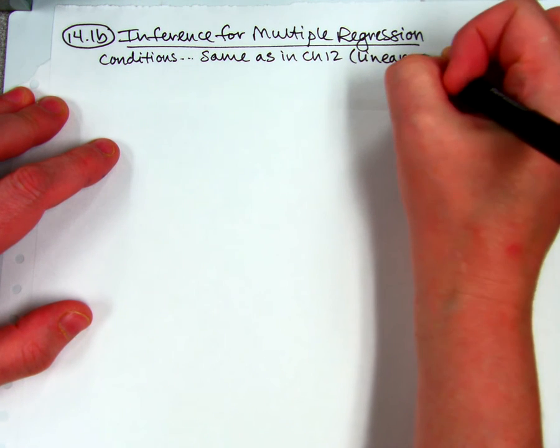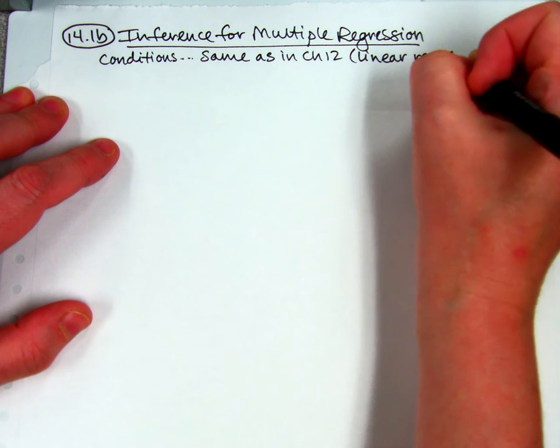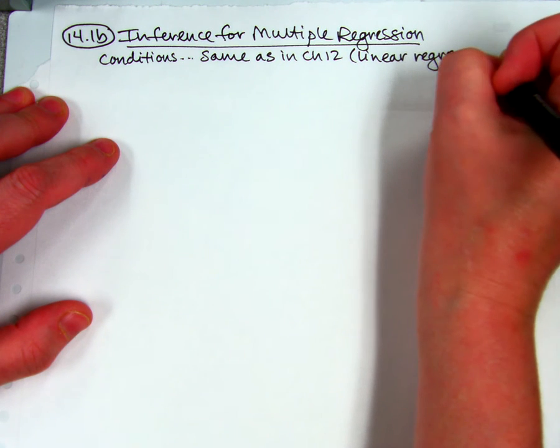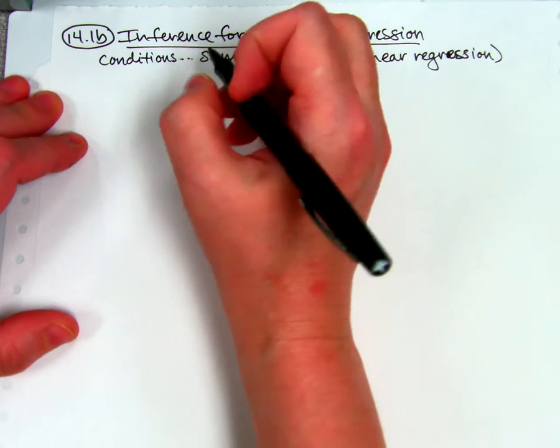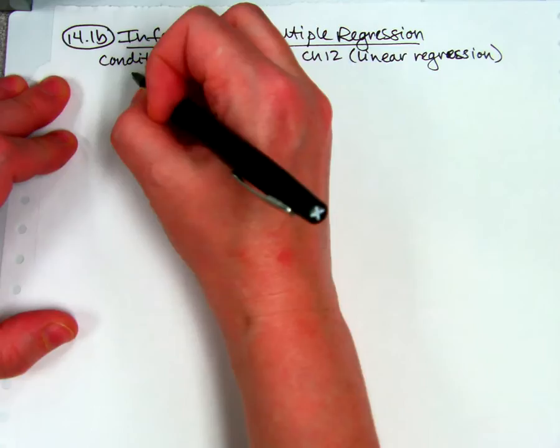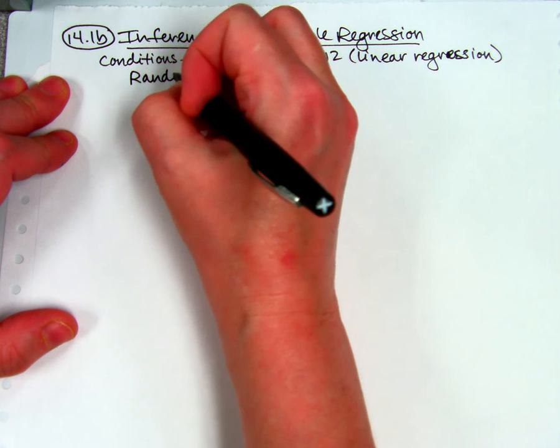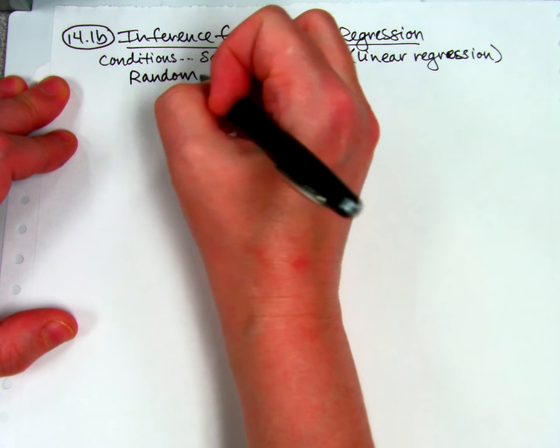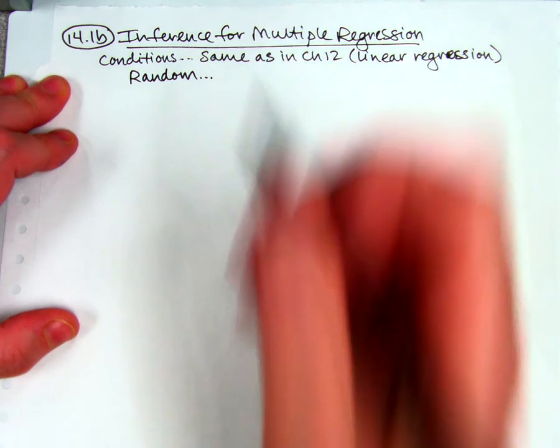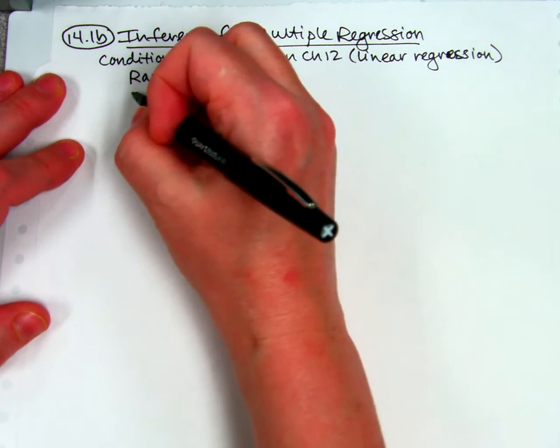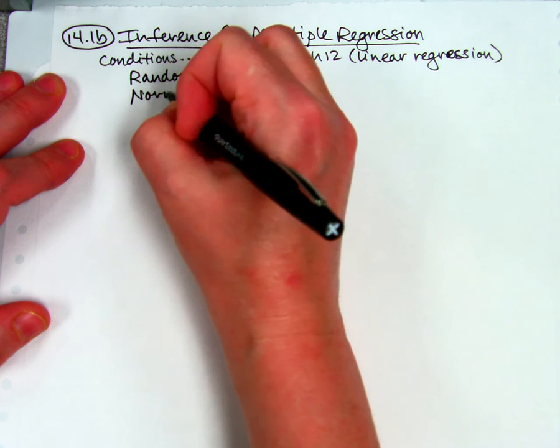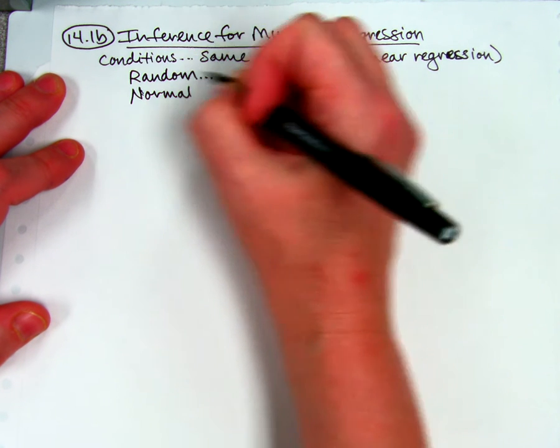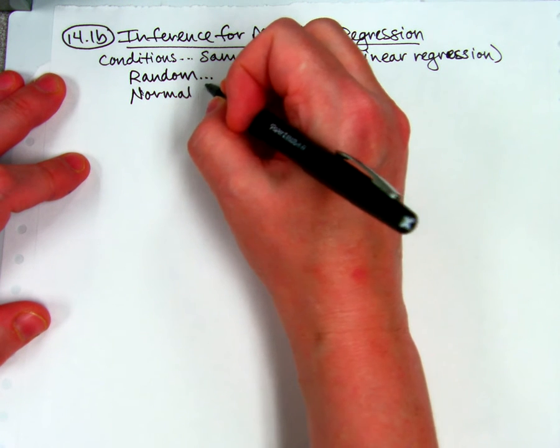I'm going to write them down, and you should too, but they are exactly the same as in chapter 12 when we did linear regression, single linear regression. It's the same. So let's just review what those are. Random, we're going to check to see if we have a random sample. Normal, just like in chapter 12, we are going to graph the residuals and see if they look normal.